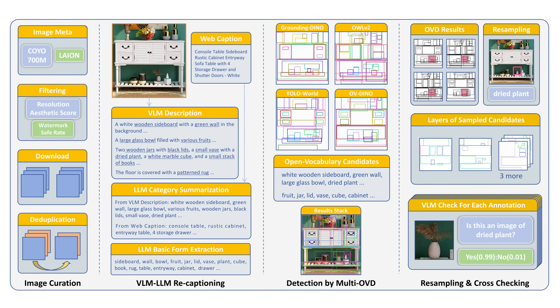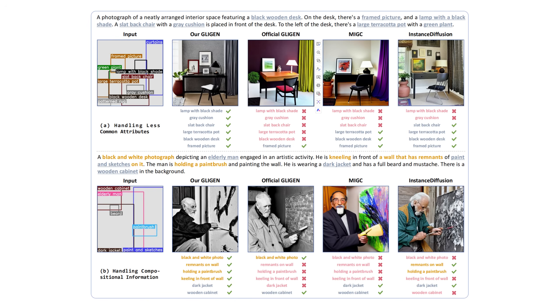Finally, VLM cross-checking: we verify each detected box to ensure accuracy. The result is a dataset with rich, diverse annotations perfect for training generation models.